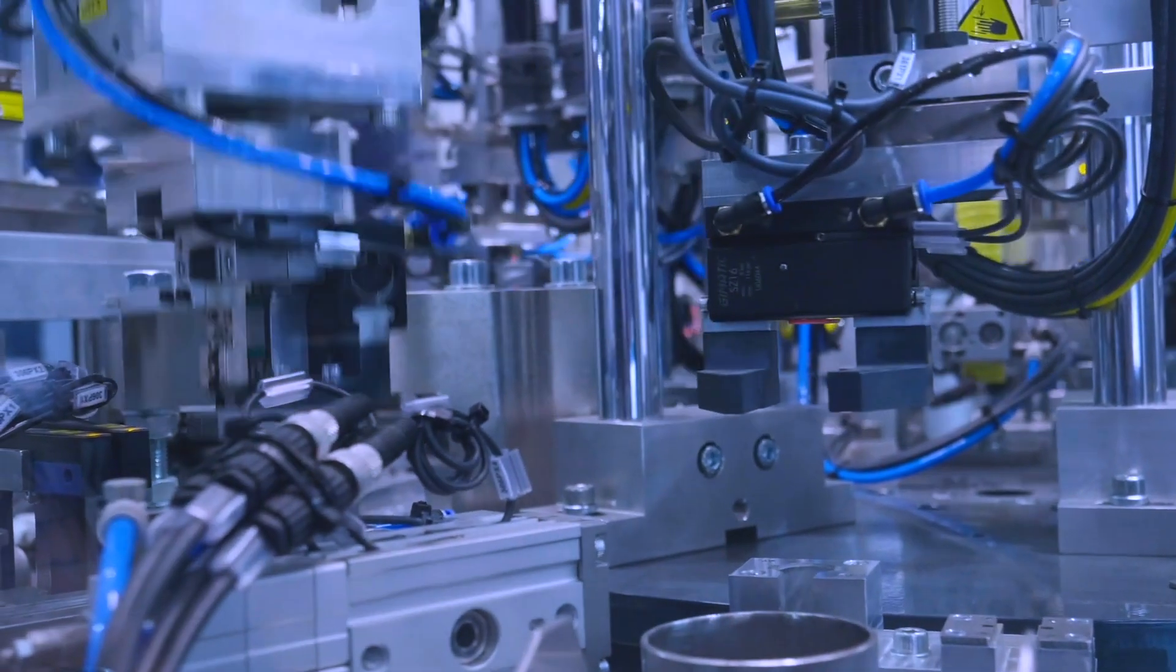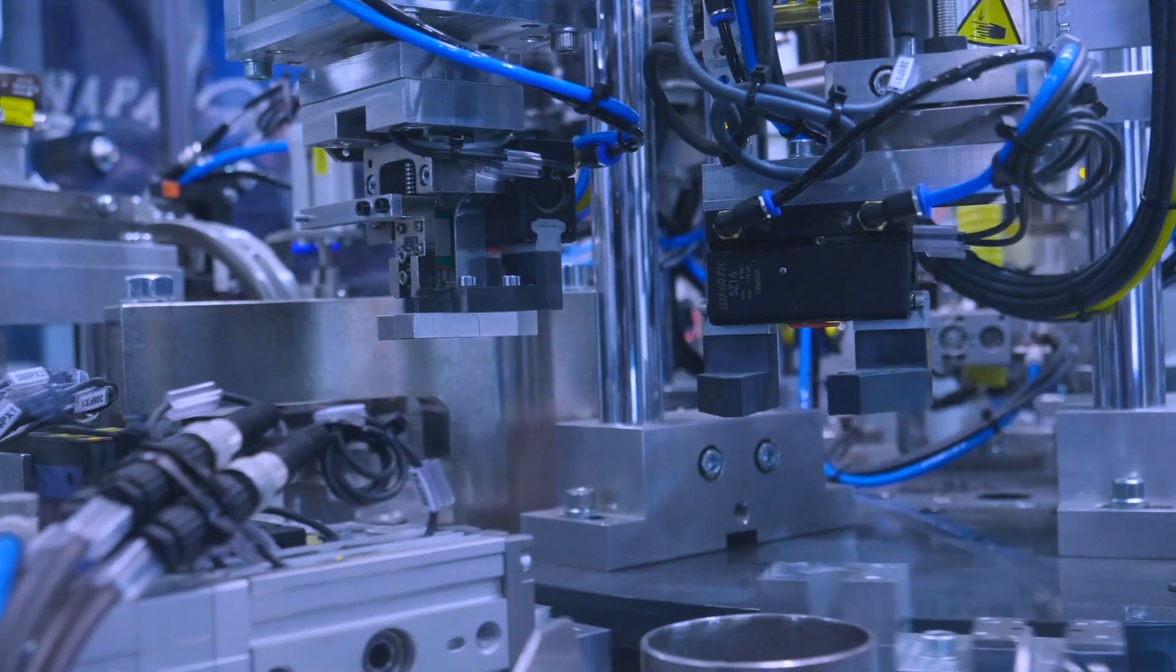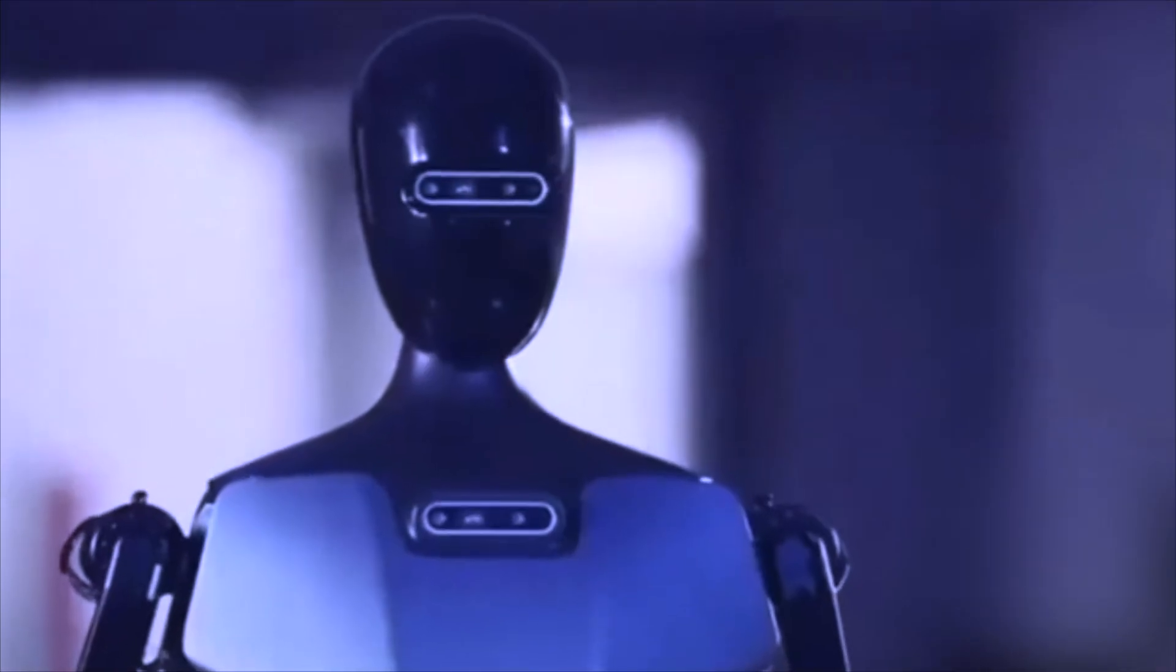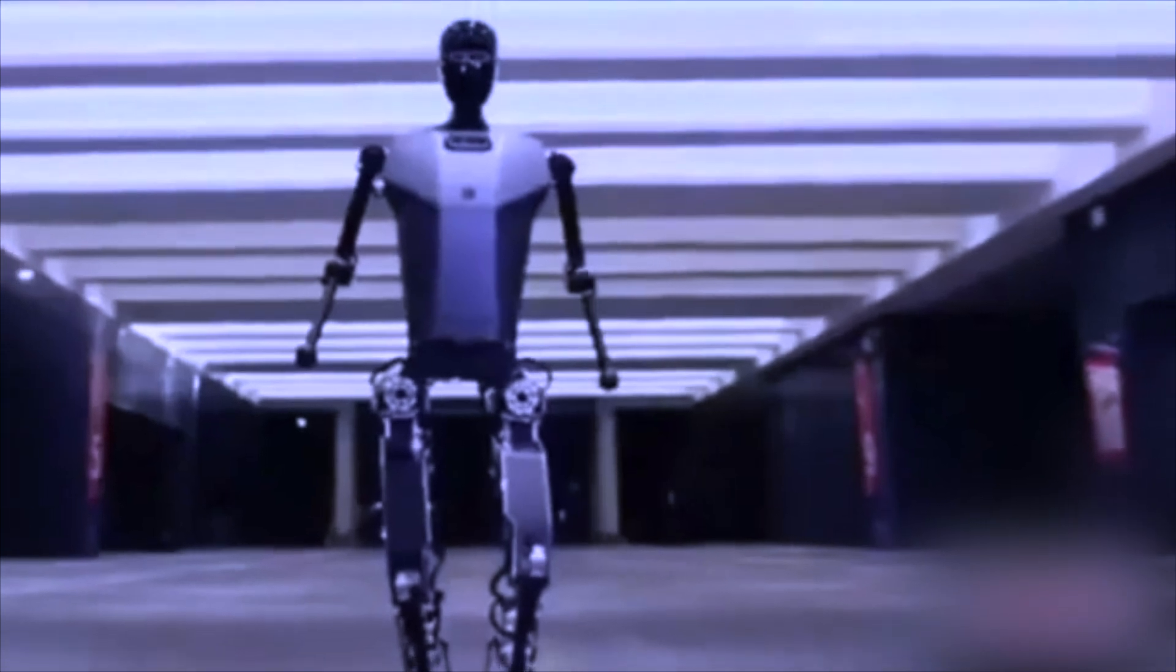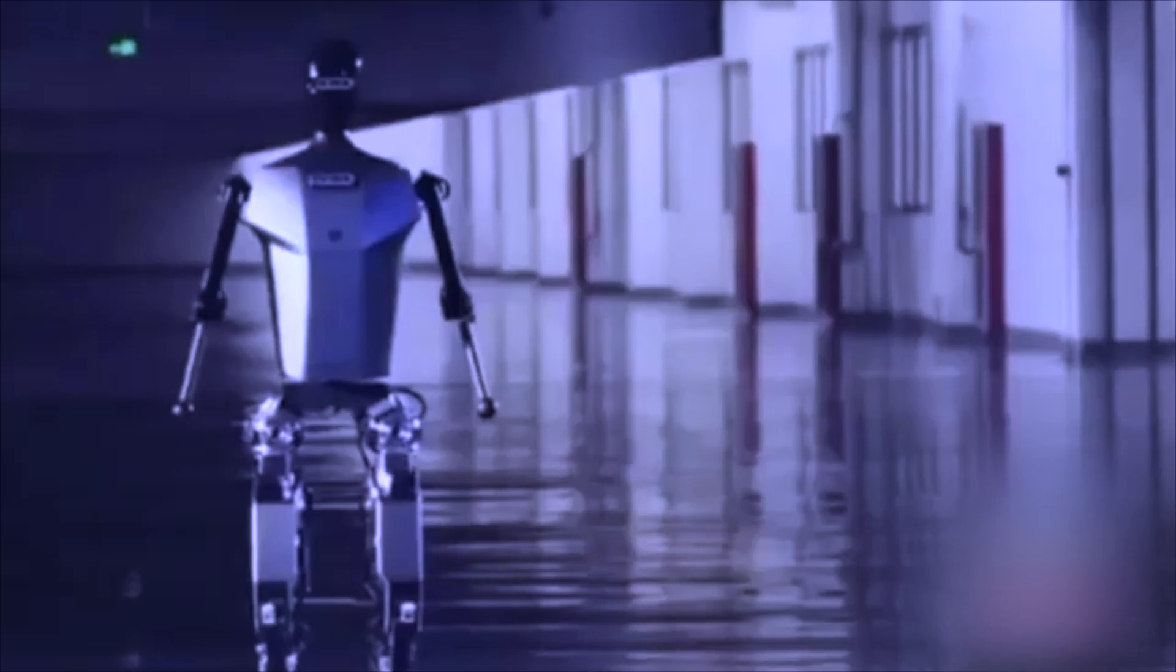Recently, the Beijing Humanoid Robot Innovation Center unveiled a remarkable creation: Tiangong, a full-size humanoid robot capable of traversing complex terrain, performing tasks with precision, and even jogging at a steady pace.